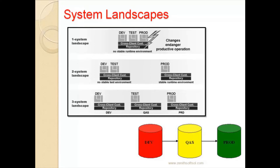The Development system is where consultants do customization as per the company's requirements. The Quality system is where core team members and other members test the customization. In the Production system, all the live data of the company is recorded. A request will flow from Development to Quality and from Quality to Production.